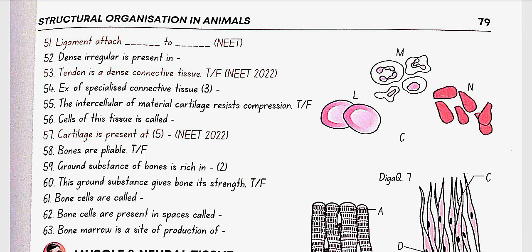Bones are pliable? No, they are non-pliable. Ground substance of bones is rich in calcium salts and collagen fibers. This ground substance gives bone strength. Yes, this is true. Bone cells are called osteoblasts. Bone cells are present in spaces called lacunae. Bone marrow is a site of production of blood cells.